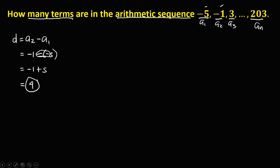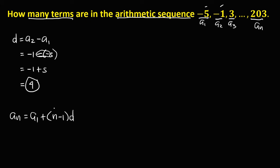To find out the number of terms, we use the arithmetic sequence formula: a sub n equals a sub 1 plus the quantity of n minus 1 times the common difference. On this problem, n is the unknown — that's the number of terms.